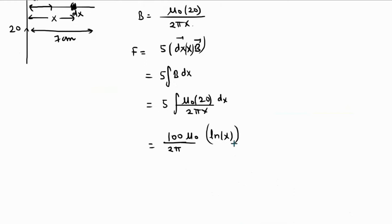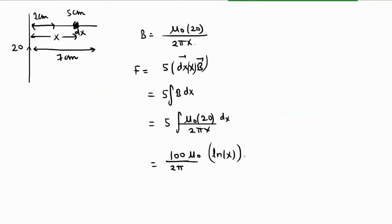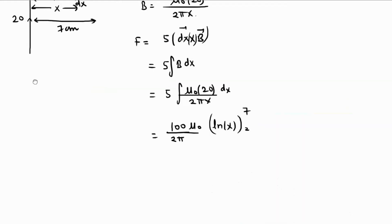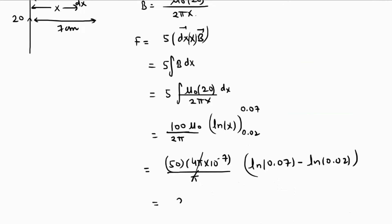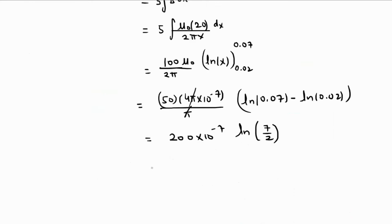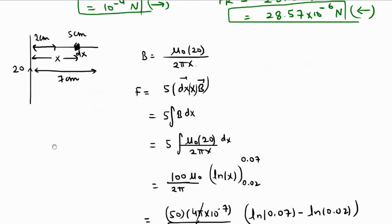Substituting B, we get F = (100 μ₀ / 2π) × ∫ dx/x = (100 μ₀ / 2π) × ln(x) evaluated from 0.02 to 0.07. This gives 50 × 4π × 10⁻⁷, and after π cancels: 200 × 10⁻⁷ × ln(7/2), which simplifies to 2 × 10⁻⁵ × ln(7/2) newtons.